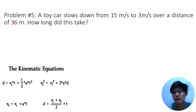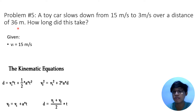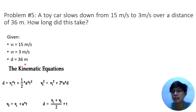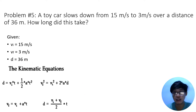Again, we need to identify the three variables. We have the initial velocity of 15 meters per second — that's where the slowing down started. Then we have the final velocity of 3 meters per second. And we have the distance of 36 meters. Now we need to identify which formula to use based on these variables.